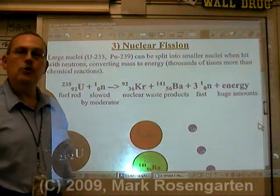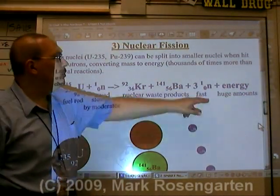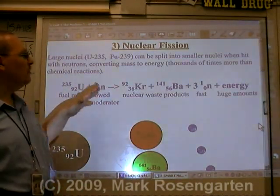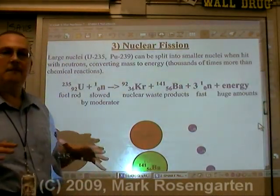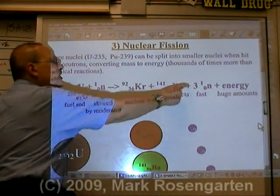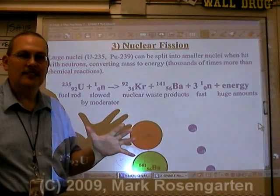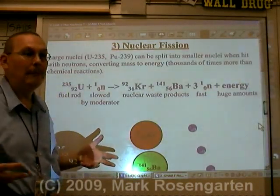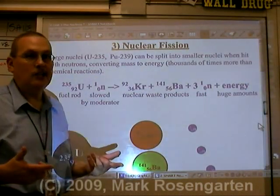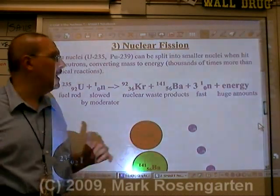Also, on average, three neutrons are shot out. These neutrons are moving incredibly fast. This process converts tiny amounts of mass — so little that it doesn't even show up in the ones place. You've got to go down to the hundreds and thousands place for this missing mass to show up, but that tiny bit of mass, times the speed of light squared, gives you monster amounts of energy.